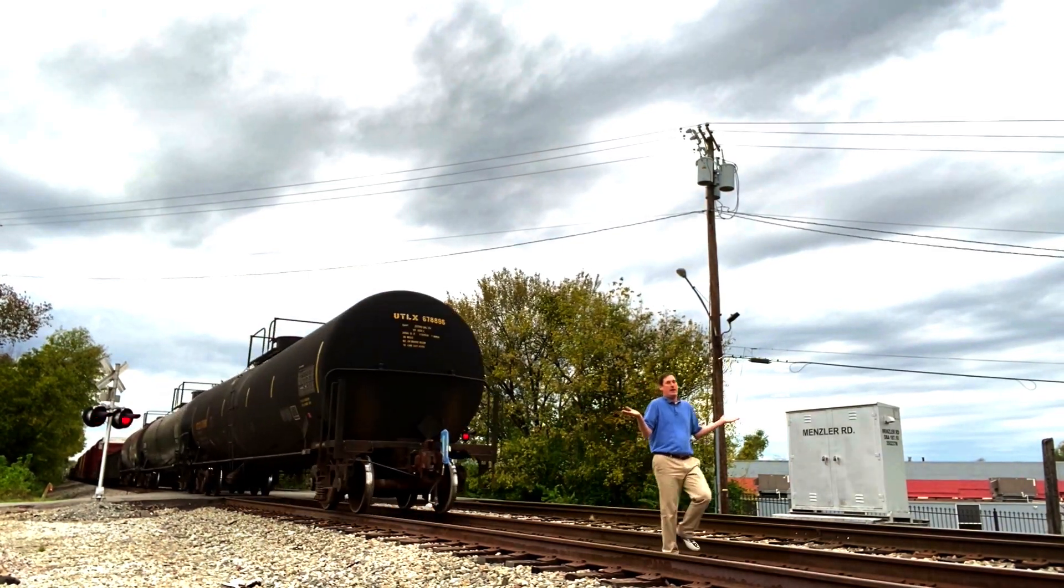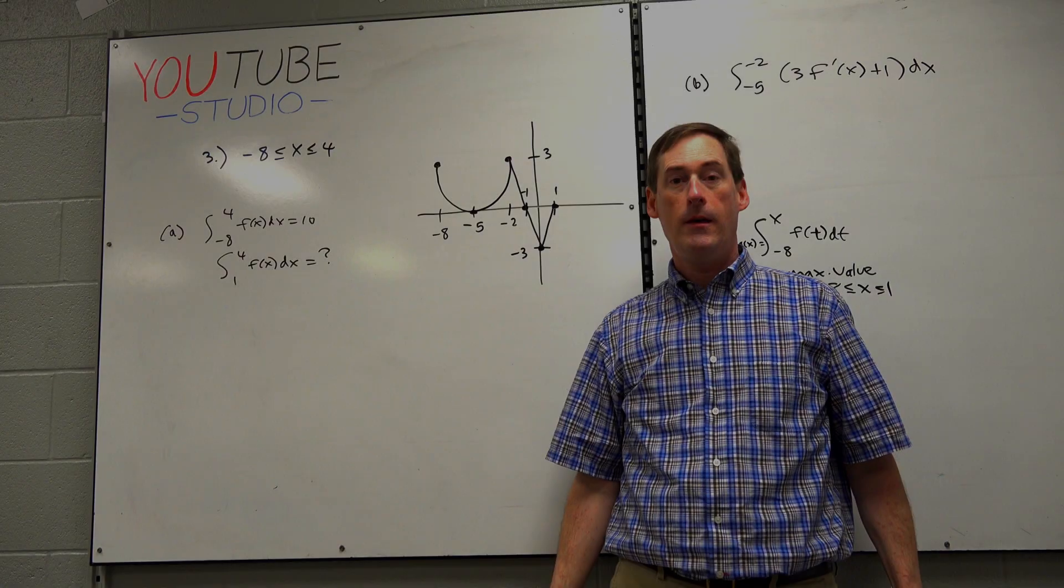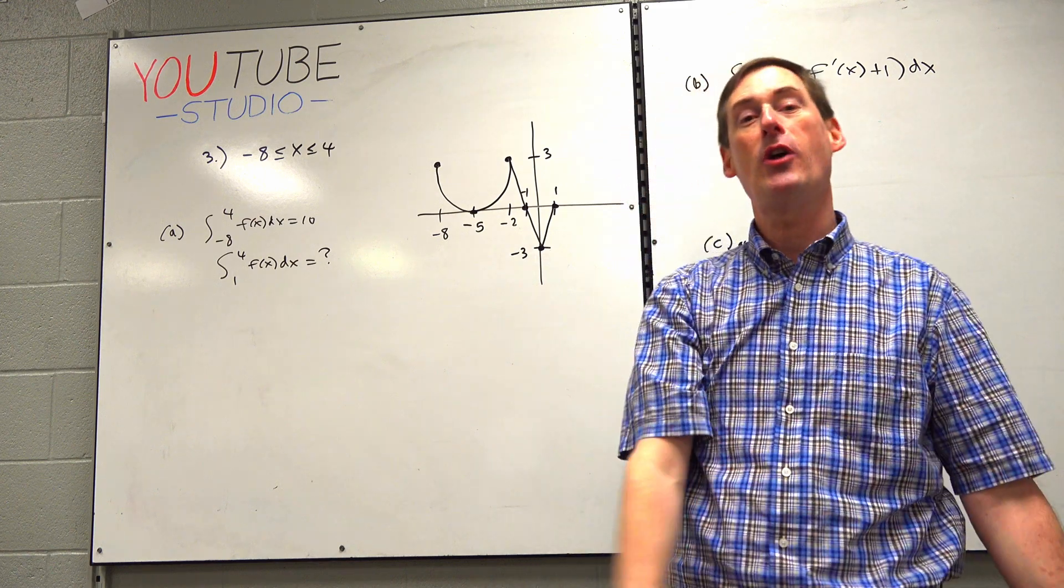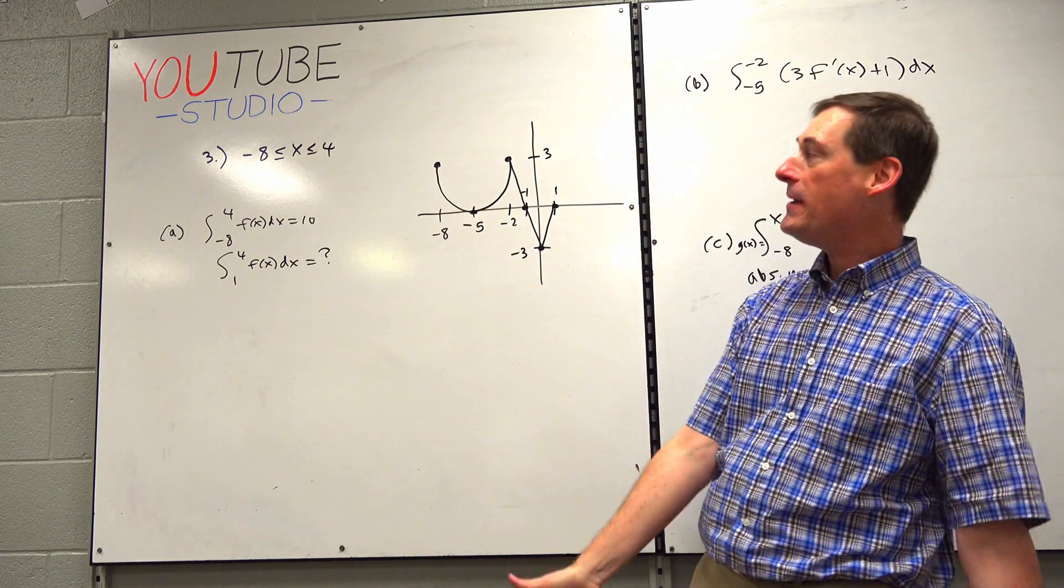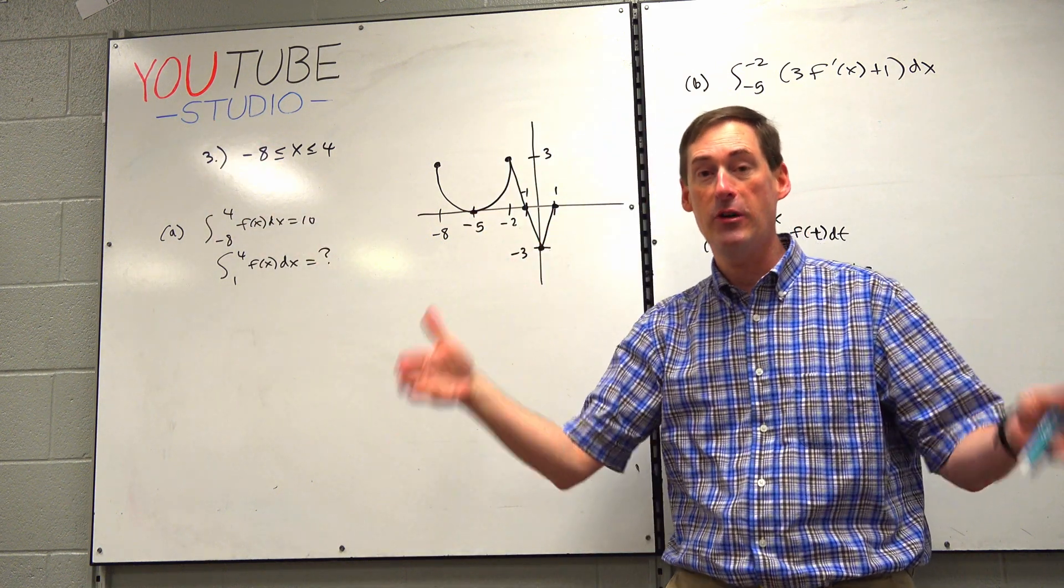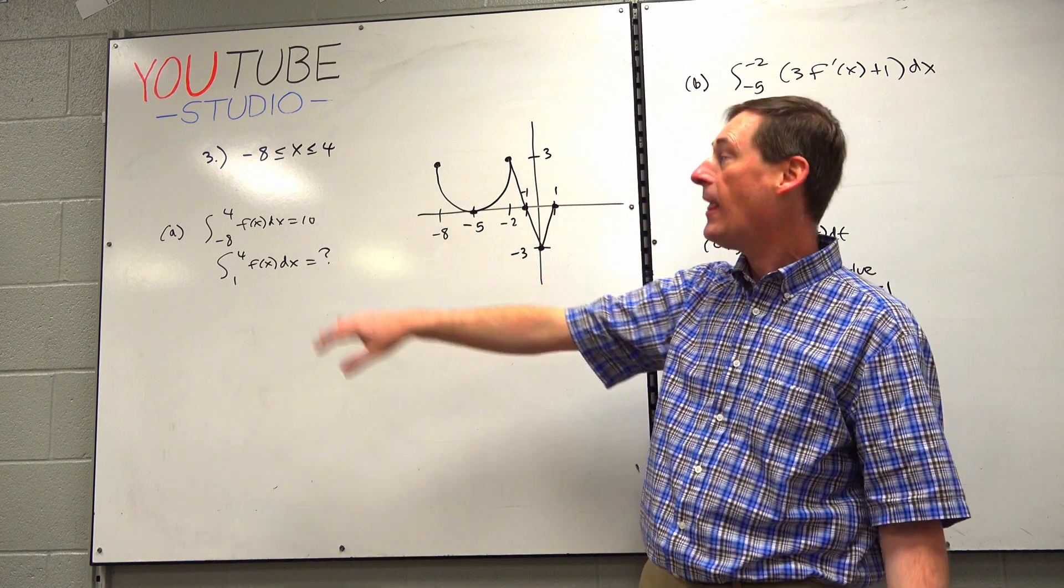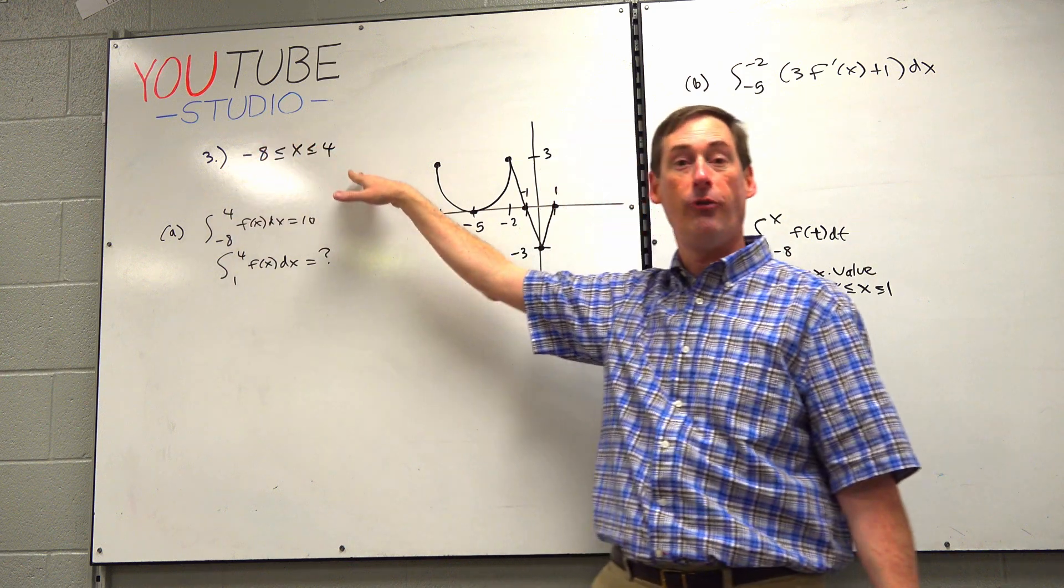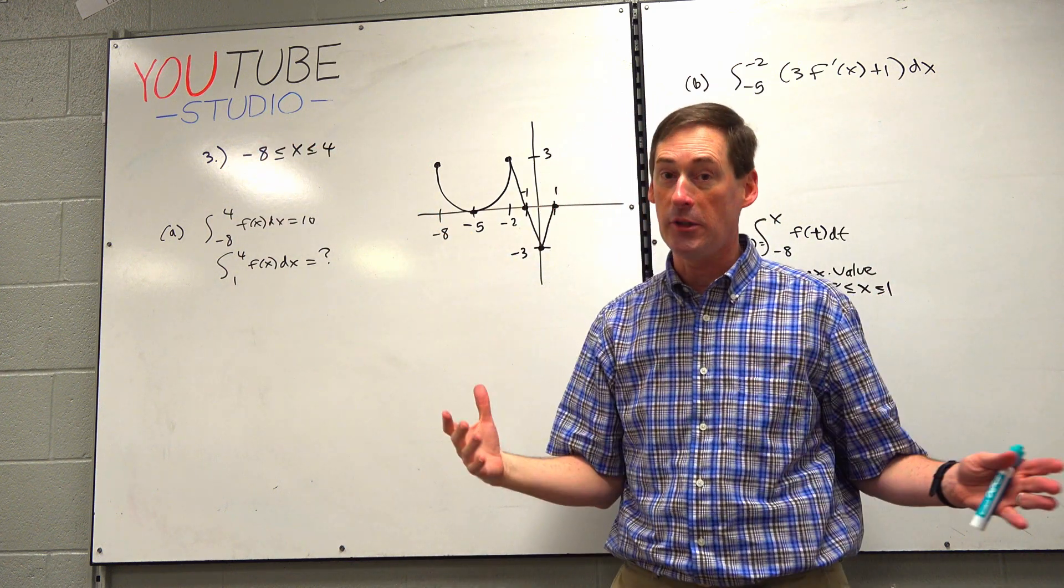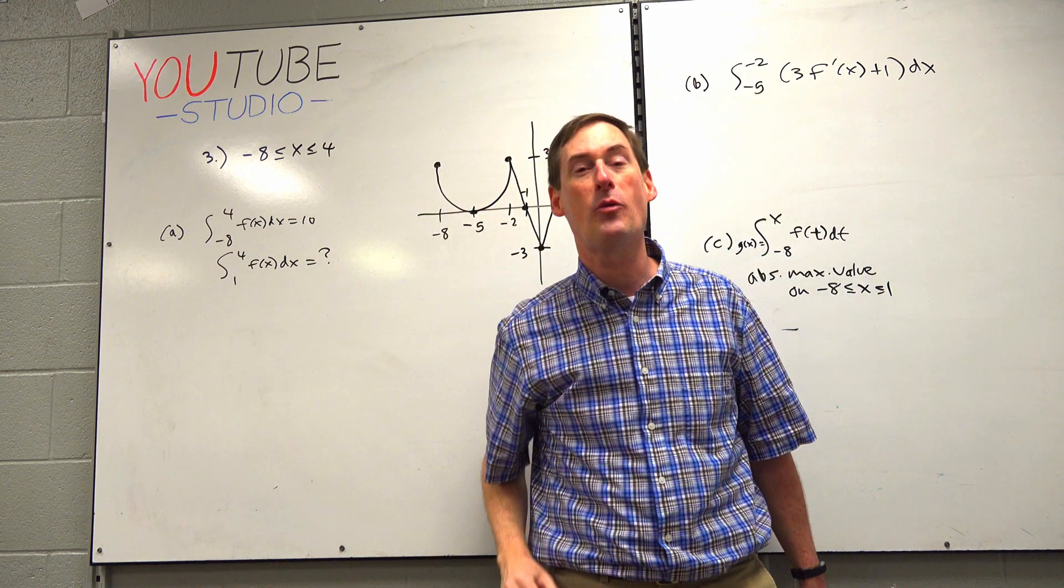All right, AB students, this is 12-3. We're going down the backstretch, soon to start reviewing for the AP test, but we kind of are already, because this was the number three question of the six free response on the 2019 AB exam. So here's what we've got.